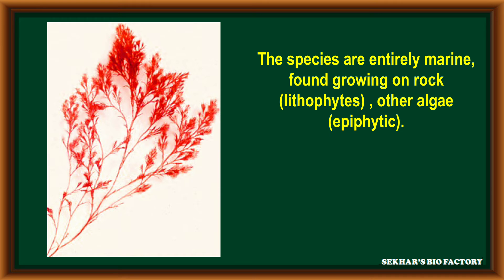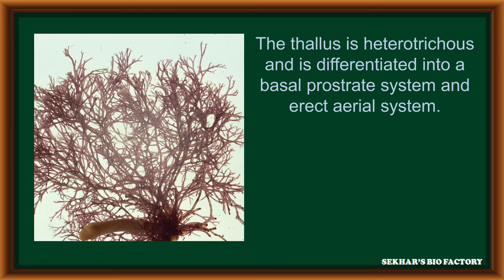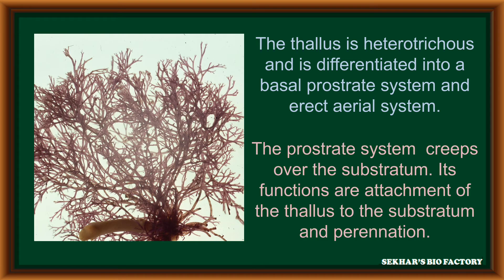Some members are epiphytic in nature. Polysiphonia is a bushy marine red alga with a feathery, multi-axial structure, usually well-branched with many branches. The thallus is generally heterotrichous in nature, meaning it is well differentiated into a prostrate system and an erect system. The erect system is aerial, while the prostrate system creeps over the substratum and functions in attachment of the thallus to the substratum and perennation.